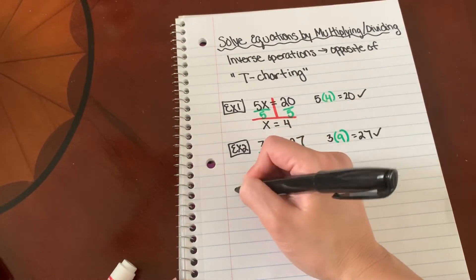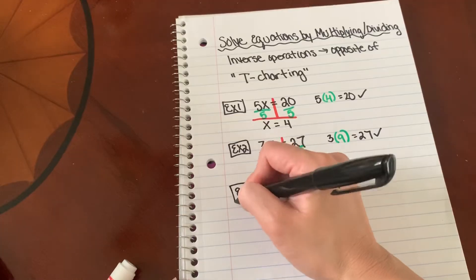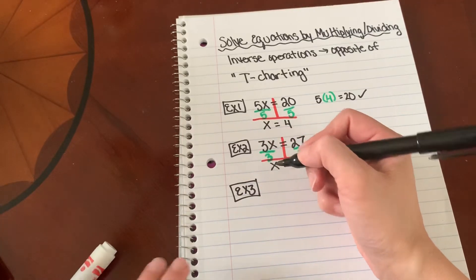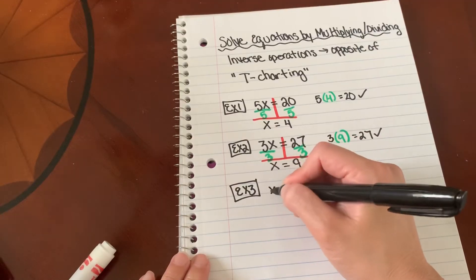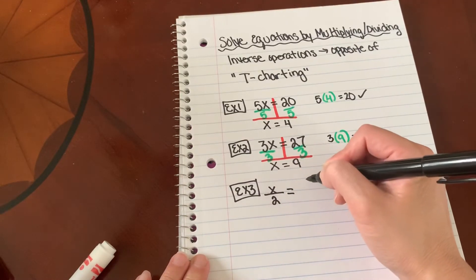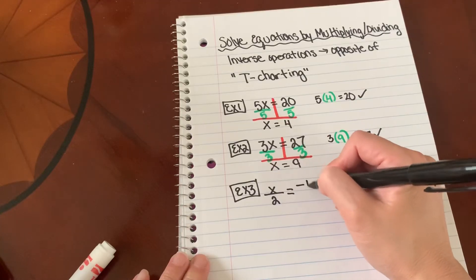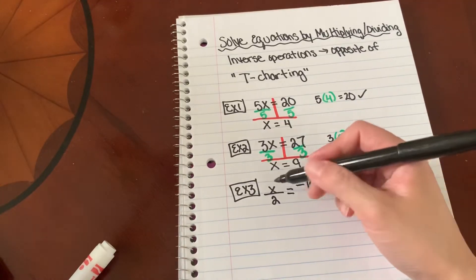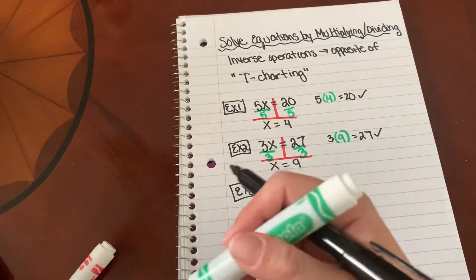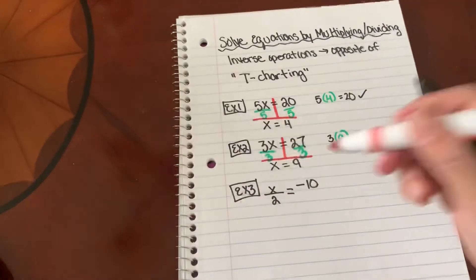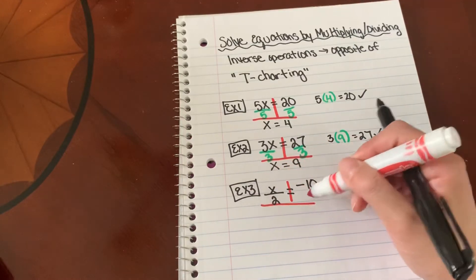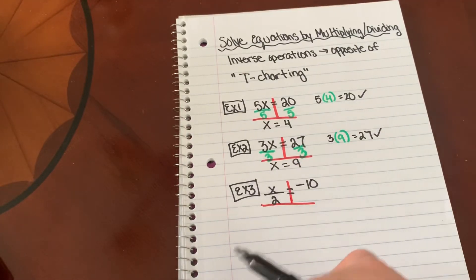Okay. So let's do example 3. I have x divided by 2 equals negative 10. So a fraction automatically means division. So we can T-chart again. Put a line through your equal sign and draw the top of your upside down T.